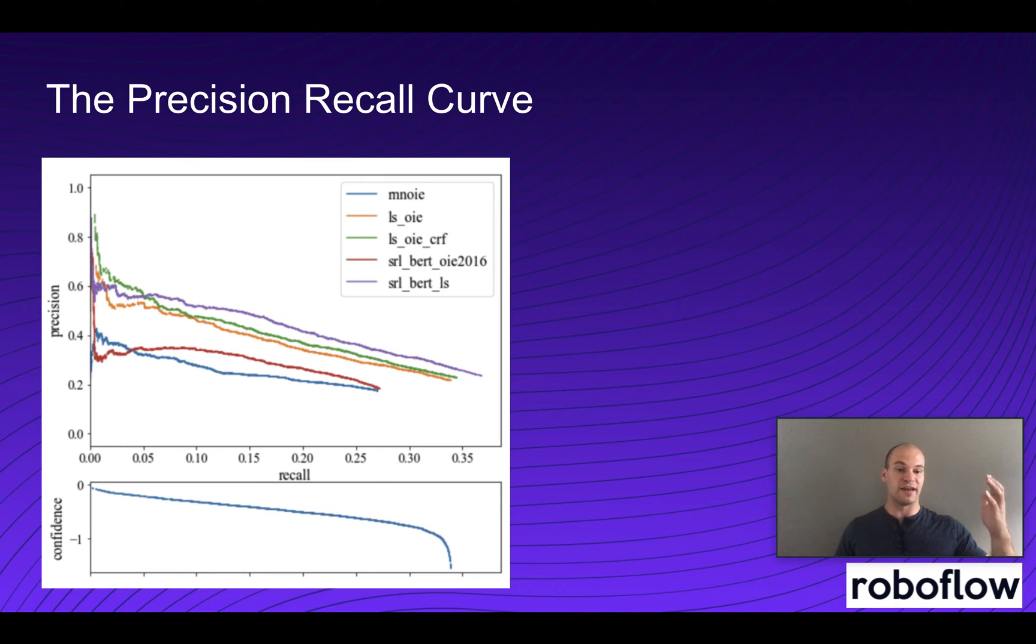So before we get into the MAP metric, which is the final metric we're building up to, we need to first understand what the precision recall curve is. The precision recall curve is basically a way of visualizing how your model is performing as you're decreasing the confidence threshold that your model is making predictions at.